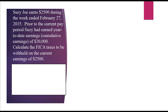Suzie Joe earns $2,500 during the week ended February 27, 2015. Prior to the current pay period, Suzie had year-to-date cumulative earnings of $20,000. Calculate the FICA taxes to be withheld on the current earnings of $2,500. Weekly pay is $2,500, year-to-date earnings prior to this paycheck are $20,000, and the pay period ending is February 27.